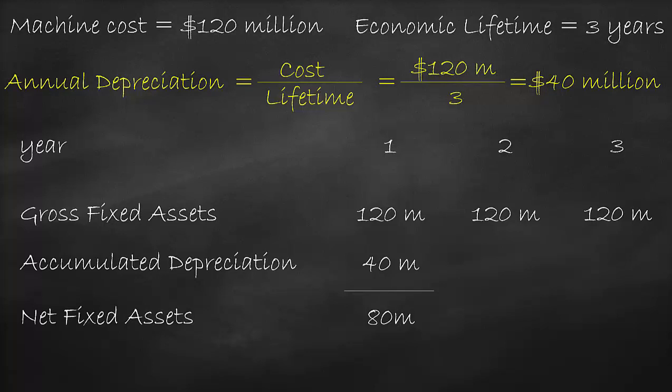For the second year, we have used the machine for 2 years, meaning the accumulated depreciation is now $80 million, which was calculated by adding the depreciation of the first year of $40 million plus the depreciation of the second year of $40 million again. Consequently, the value of the machine after 2 years is $120 million minus $80 million of depreciation, which is equal to $40 million, which is the net fixed asset value for year 2.